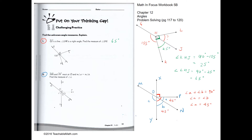Angle C and angle B make a straight line, so C plus B must equal 180 degrees. Therefore angle C must be 180 minus 45 degrees, which equals 135 degrees. So the answer is 135 degrees.